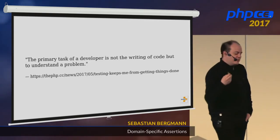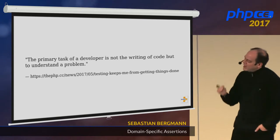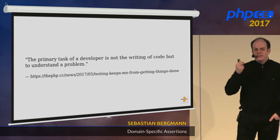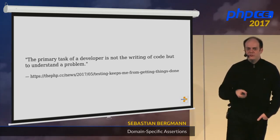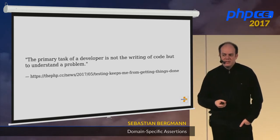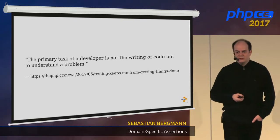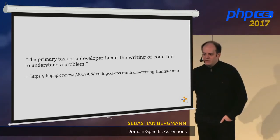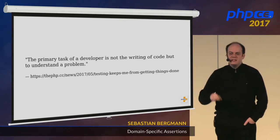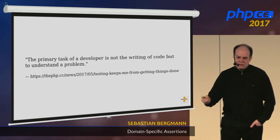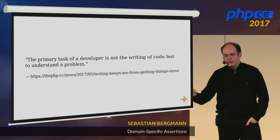This leads to the realization that your primary task as a developer is not to write code. Your job is to understand and then solve a problem — and not every problem needs code to be solved. Every line of code you don't write is a line of code that does not impede you in the future, cannot contain a bug, and doesn't need to be tested.